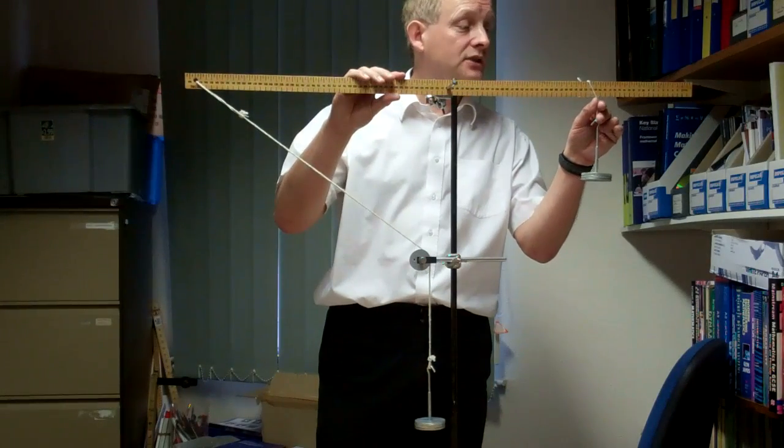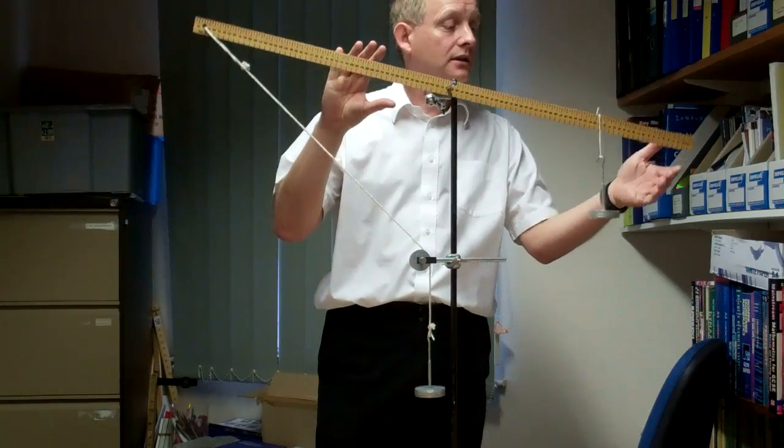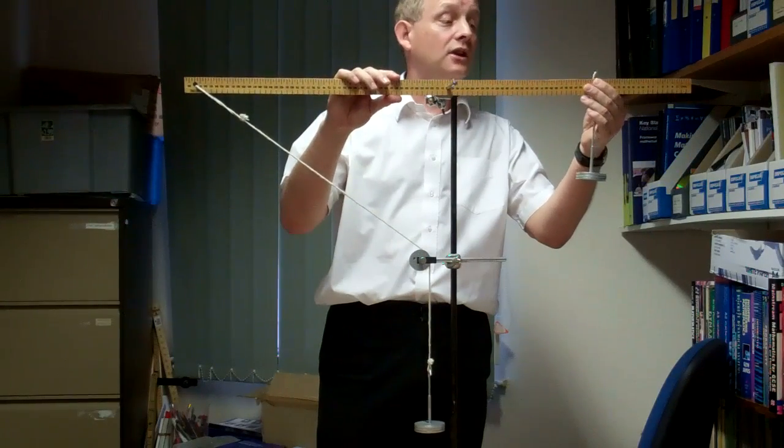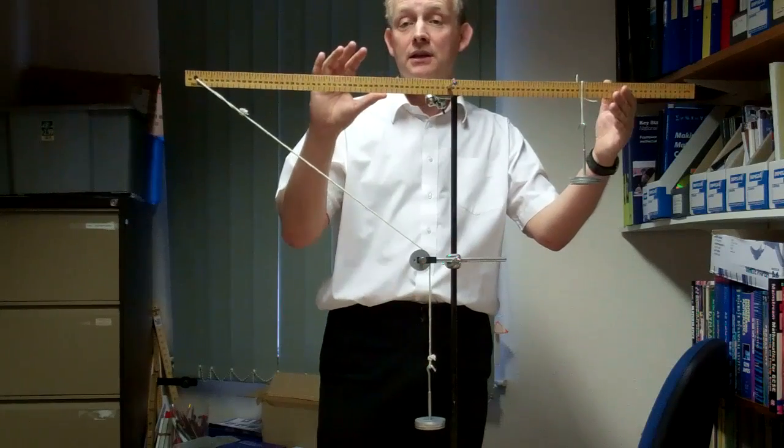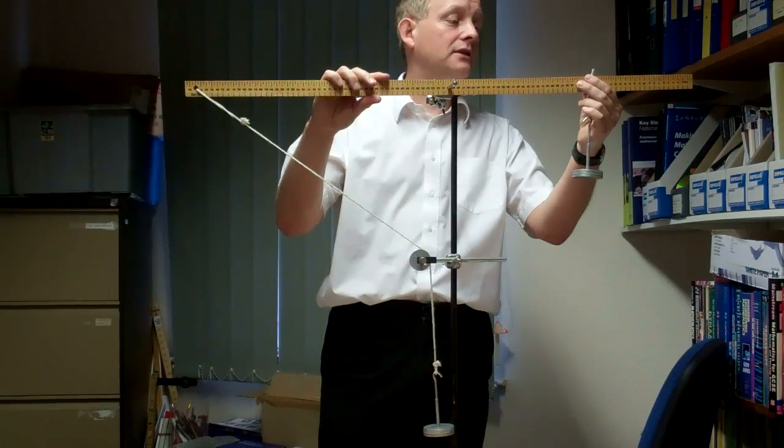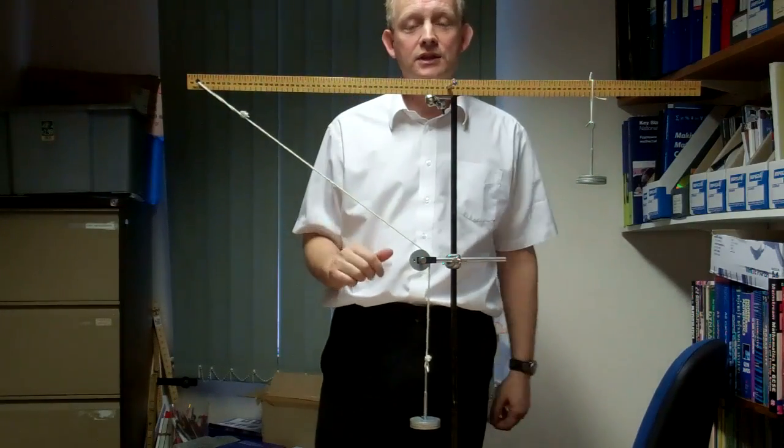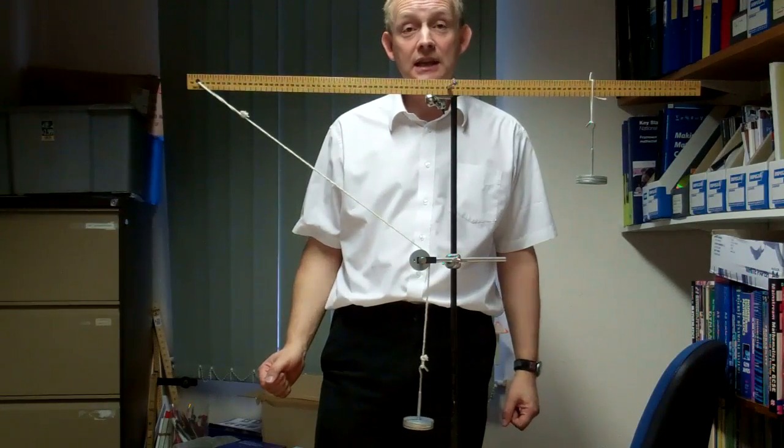If I move this mass slightly to the left, you can see that it is no longer in equilibrium. If I move it slightly to the right, you can see that it moves the other way. And if we go back to where we started, you can see that it remains nicely in equilibrium.